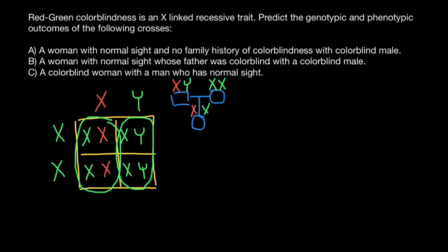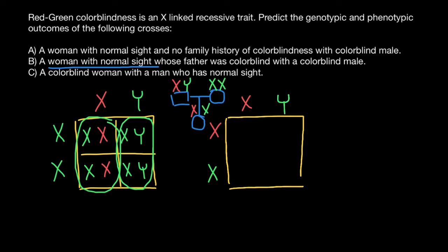Her phenotype is normal, but she is 100% a carrier. Now we know that this woman is an obligate carrier with normal vision. We put her genotype on one side of the Punnett square. We are also told the male is colorblind, so his genotype would be a defective X chromosome and a normal Y chromosome. Let's build a simple Punnett square and see what we find in the progeny.